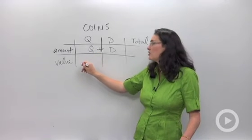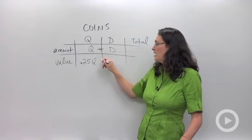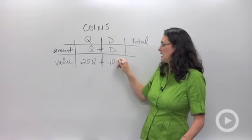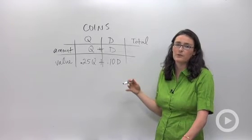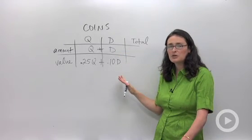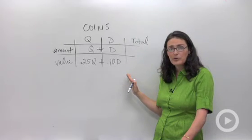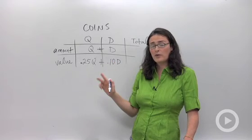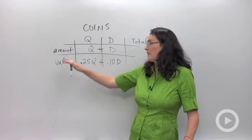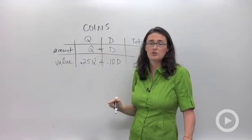Down here, for the value, I have to do 25 cents times the number of quarters, plus 10 cents times the number of dimes. It's going to give me whatever total value the problem presented for me. If this helps you making a table like this, by all means, please do. If this doesn't help you, that's fine too. Just keep in mind, you're going to need two equations with two variables. One of your equations will be about the amount of coins, and the other equation will be about the value of those coins.